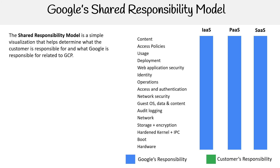The idea is that you have things that Google is responsible for and things that you're responsible for. For software as a service, notice how much blue there is — you have the least responsibility, which is great, because then you can just focus on fewer things. SaaS is something like Microsoft Word: you write your article, that's the content, you might share it with somebody, and you're just using the platform.